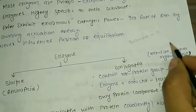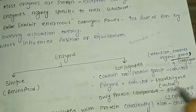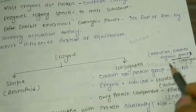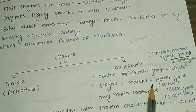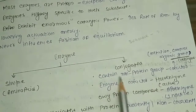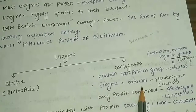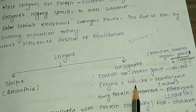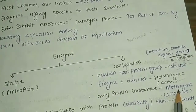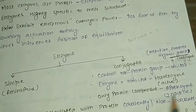Now let's talk about holoenzymes. Holoenzymes are the complete, active form of the enzyme consisting of the enzyme protein plus cofactors. If we remove the cofactors and keep only the protein part, we call that the apoenzyme, which is biologically inactive.